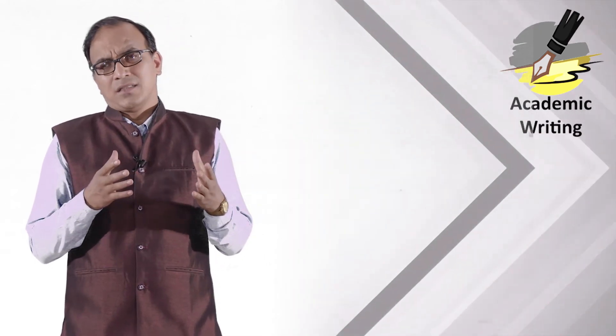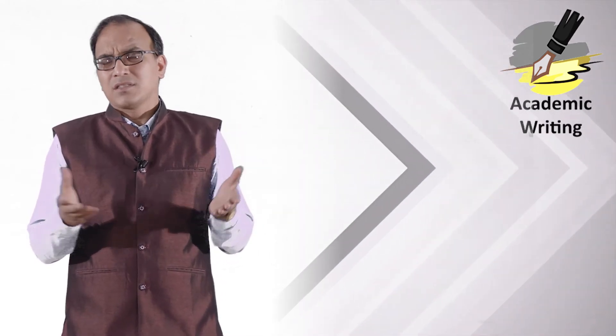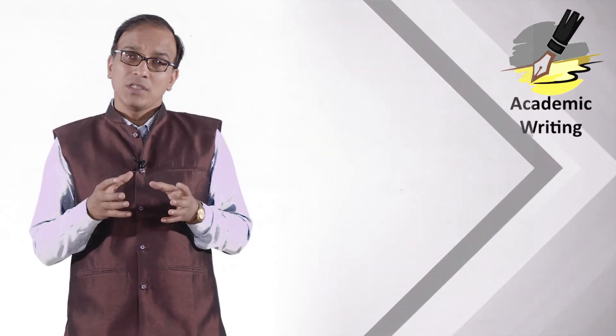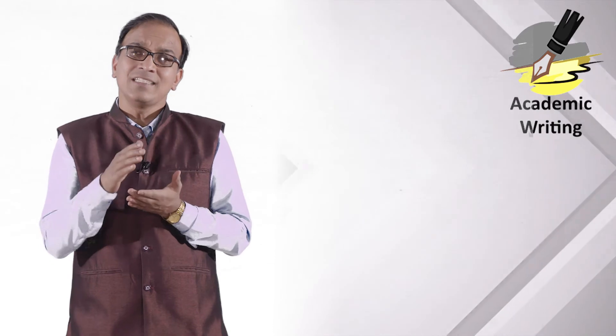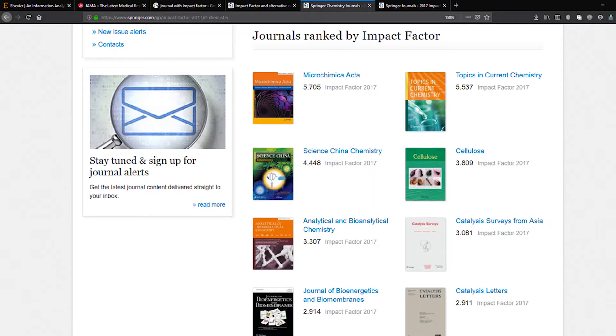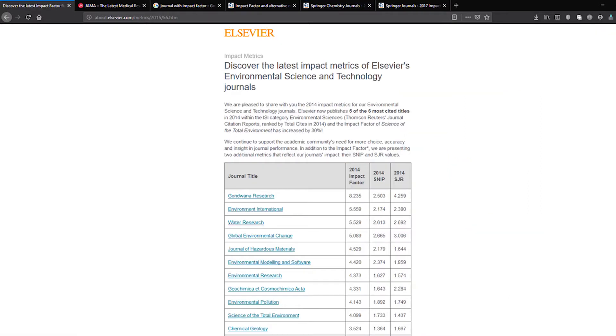The five-year impact factor shares similar limitations as the standard impact factor. However, it provides a more holistic approach by extending the time frame for tracking citations from two years to five years. You can see that in most journals, both the two-year and five-year impact factors are generally mentioned on the journal's home page.